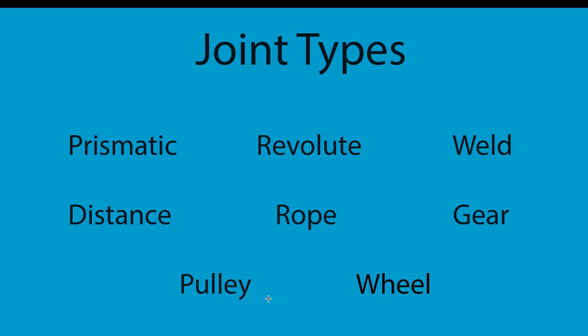And then we have our pulley joint, which is a little bit more complicated to think about. It's used to create what is called in physics an idealized pulley. The pulley connects two bodies to a ground and to each other. As one body might move up or to the left or right or whichever direction it's oriented, the other body will receive that extra slack and move down. The total length of the pulley rope is conserved according to however the bodies are set up in the beginning.